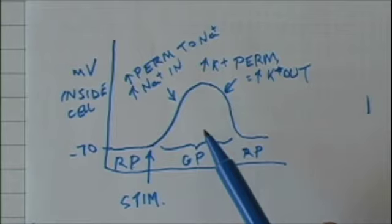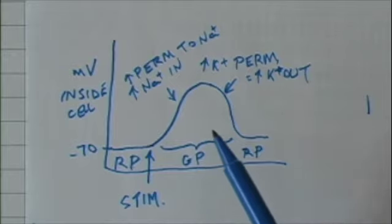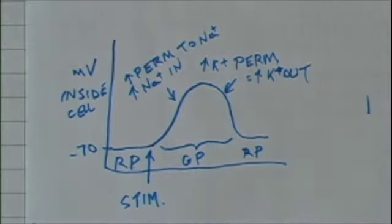Now, how is that graded potential translated into a nerve impulse? Well, before we do that, we have to look at another type of graded potential.